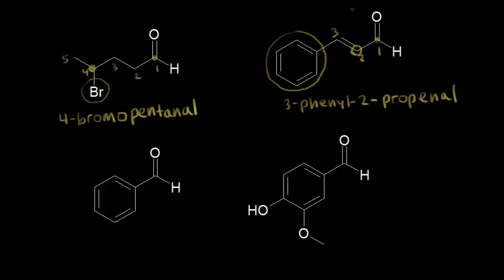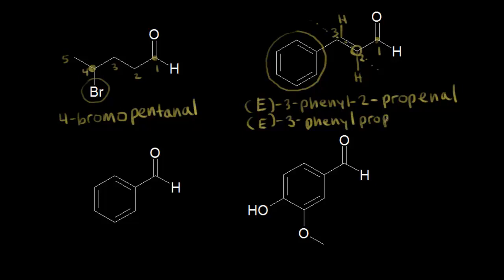If you want to specify the stereochemistry of the double bond, you think about a hydrogen being here and a hydrogen being here. The hydrogens are on opposite sides, so you could say that they're trans, or you could use the E/Z system — your highest priority groups are on opposite sides, so this would be E. So E-3-phenyl-2-propenal is one way to name this molecule — that's kind of the old way. If you want to do it the newer way, you would write E, then three-phenyl, then prop-2-en-al. The two specifies where the double bond is, and you still have your AL ending.